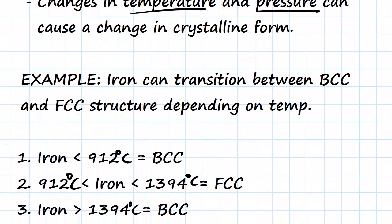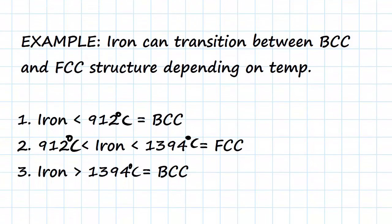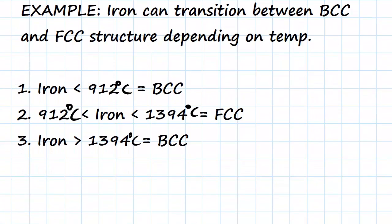Iron for example can transition between BCC and FCC structure depending on the temperature. So at room temperature, any temperature below 912 degrees Celsius, iron exists in BCC form.